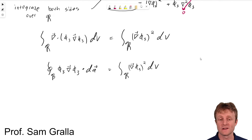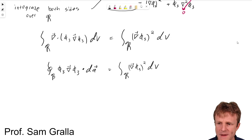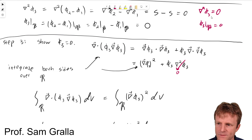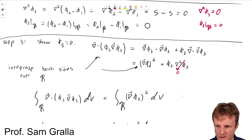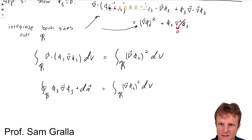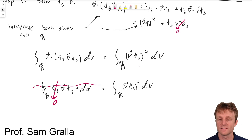We have to think very carefully about this equation. On the left-hand side, we have the integral over the boundary. And what's happening on the boundary? On the boundary, phi 3 is actually zero. So the whole left-hand side, because phi 3 is zero on the boundary, is actually zero. The left-hand side is gone, and so the right-hand side equals zero.